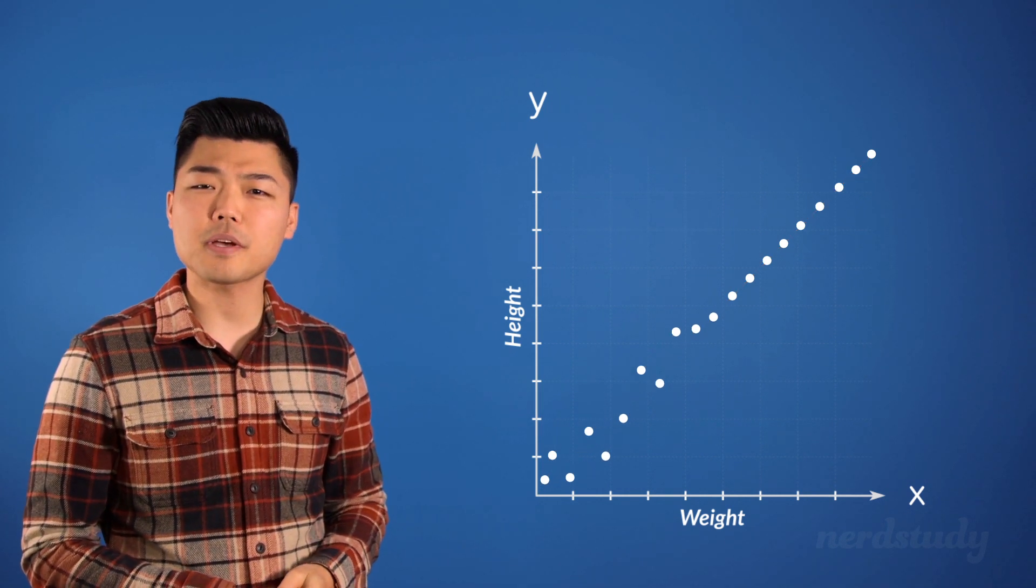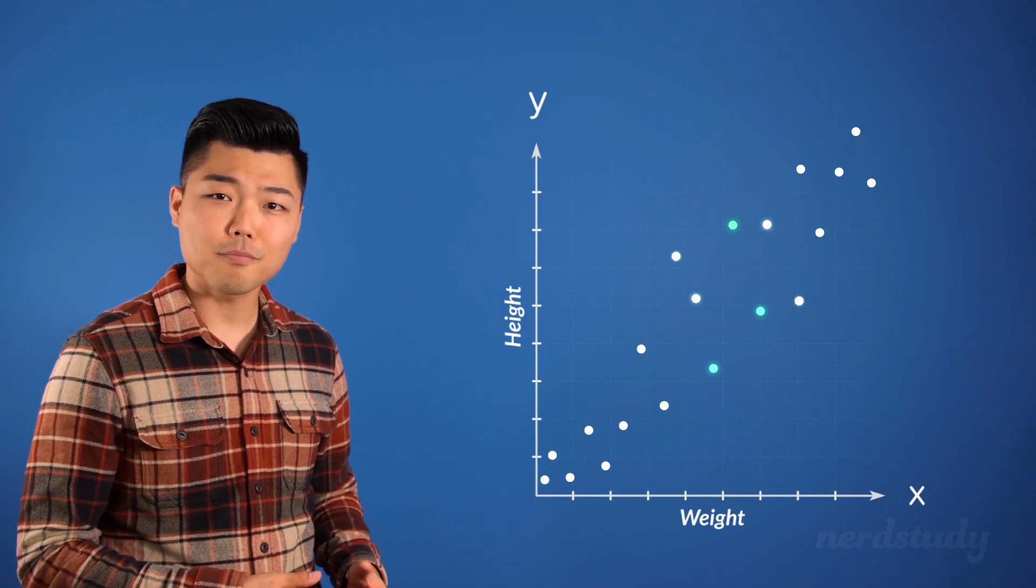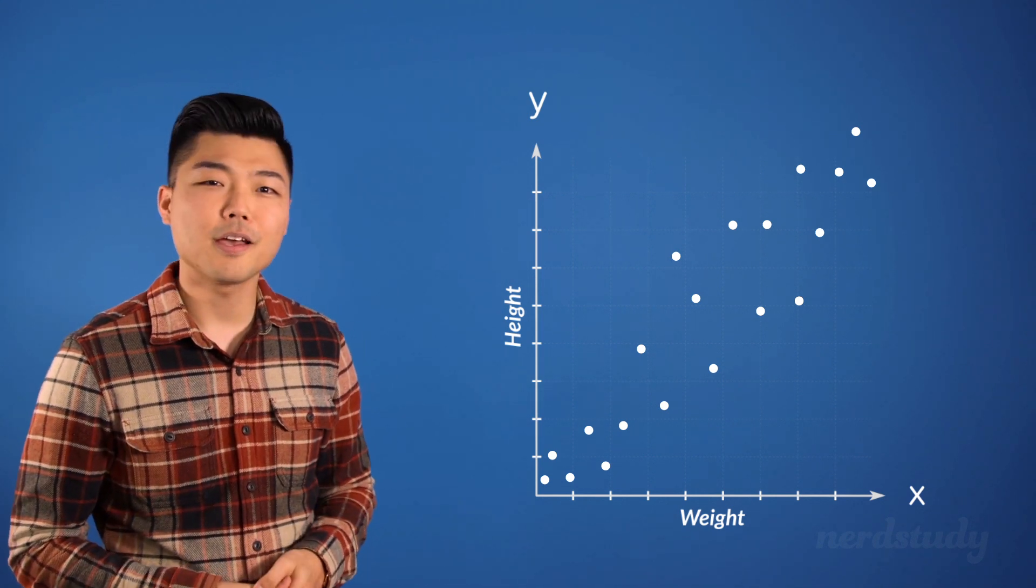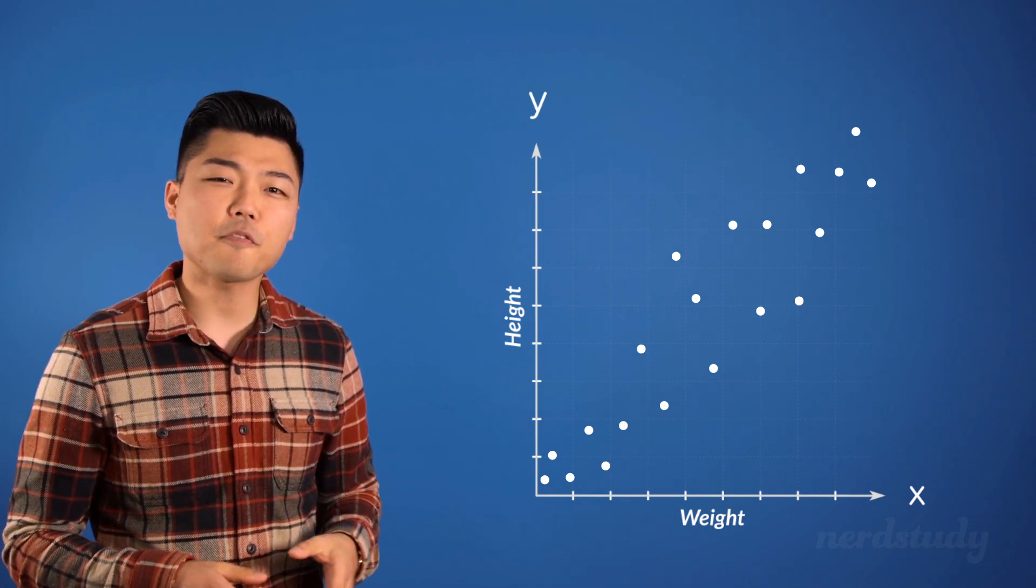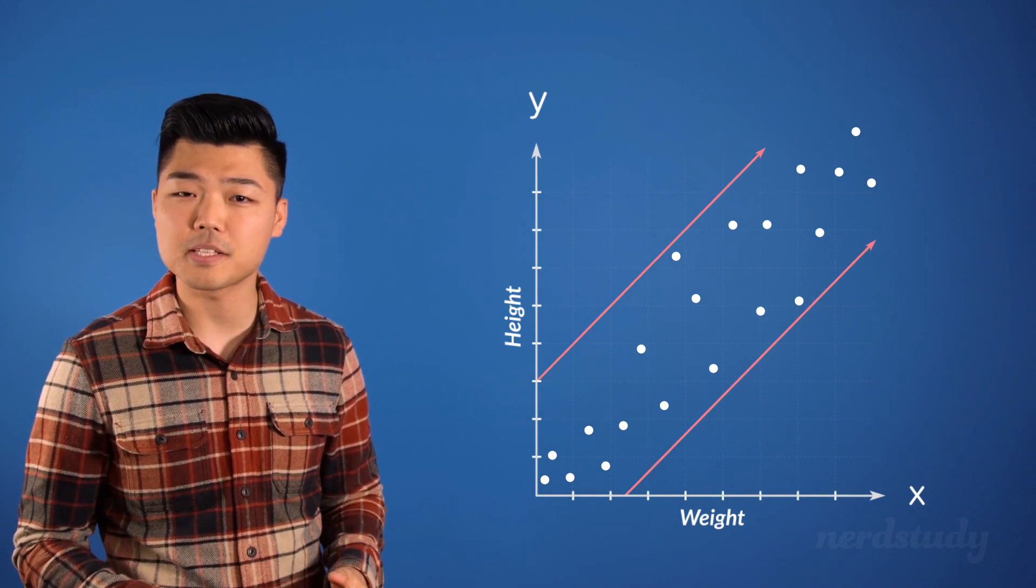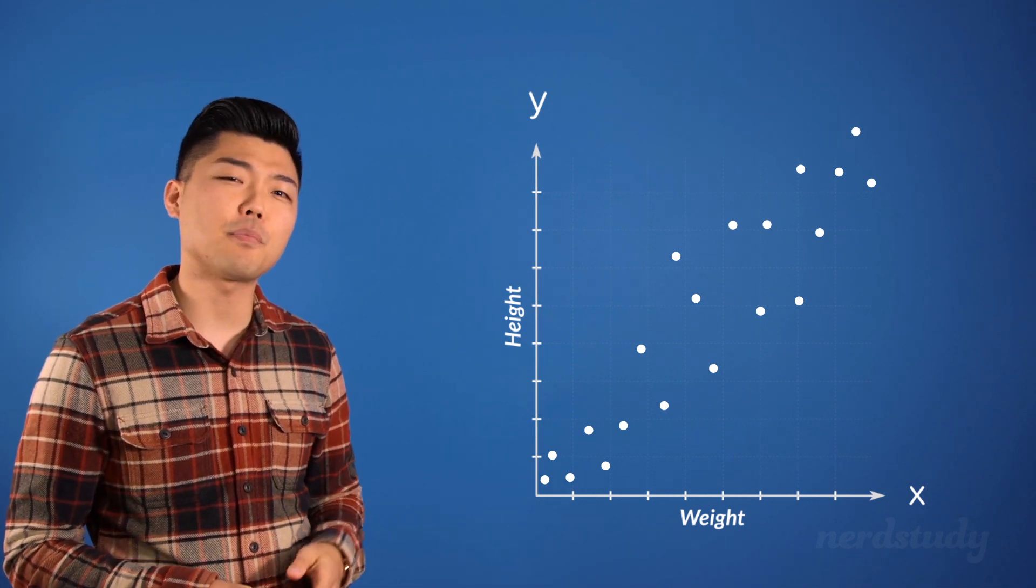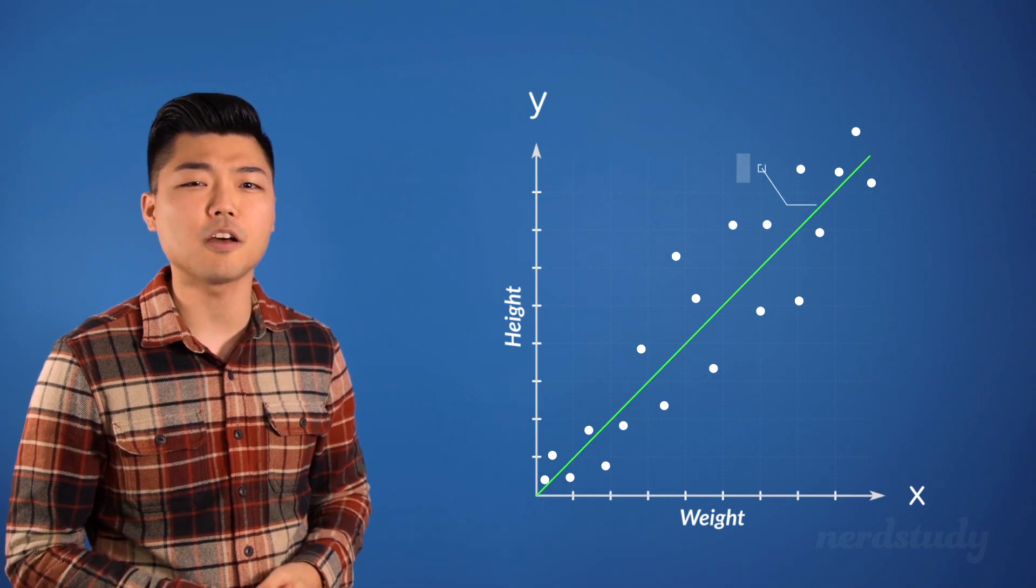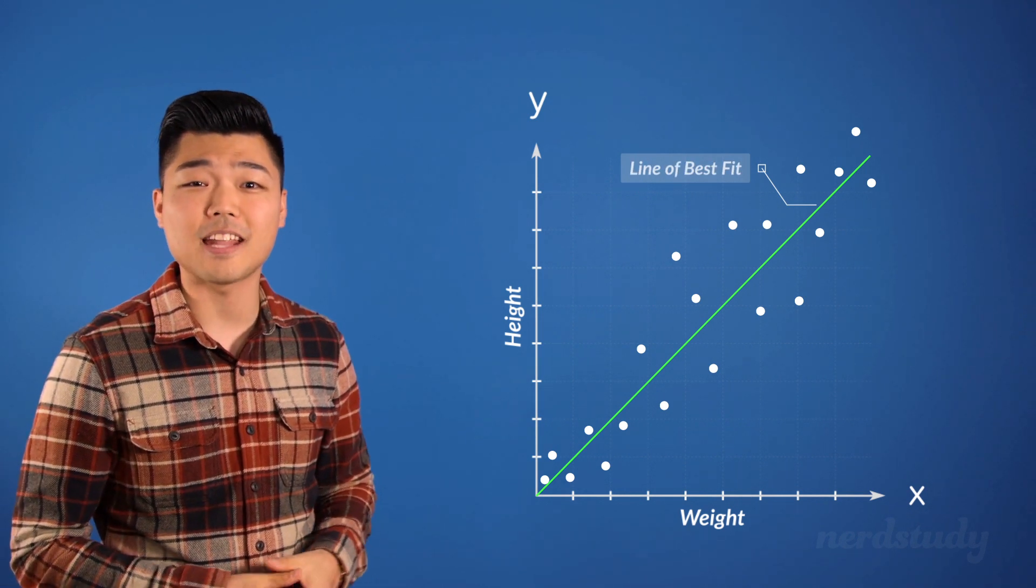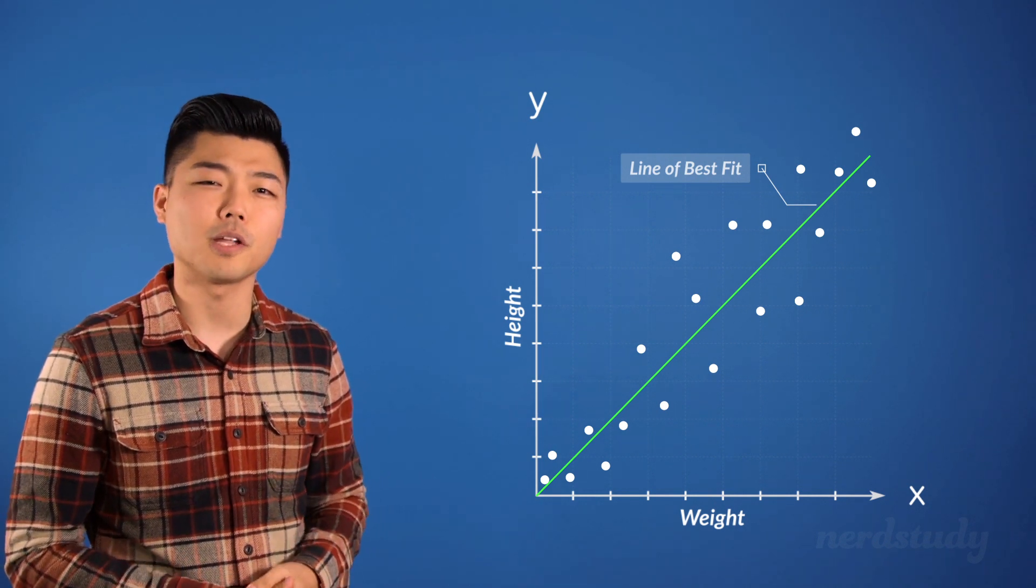Instead we would expect to see that generally speaking as you weigh more there's a roughly better chance that you're probably also taller. This graph shows the imperfection in our correlation but the direction is still quite suggestive. In these situations we might have been asked to draw a line of best fit which is a line that best represents the data of a scatter plot and gives us the general direction of the correlation.